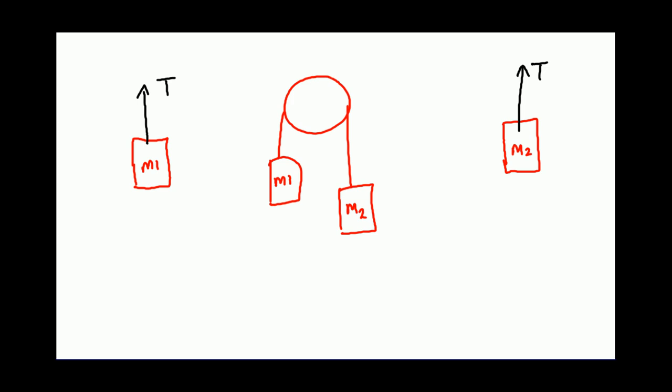You are given the direction of acceleration. In what direction does the object accelerate vertically up? That means what? Net force is vertically up on M1. If net force is vertically up, then the force up has to be greater than force acting vertically down.